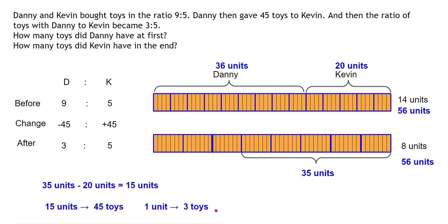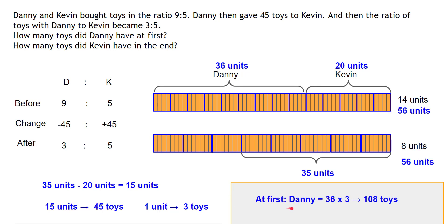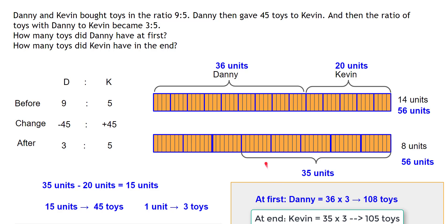Now we can figure out the answers. Danny had 36 units at first, and one unit represents 3 toys, so Danny had 36 × 3 = 108 toys at first. At the end, Kevin had 35 units, so 35 × 3 = 105 toys. That is the answer using the model method.